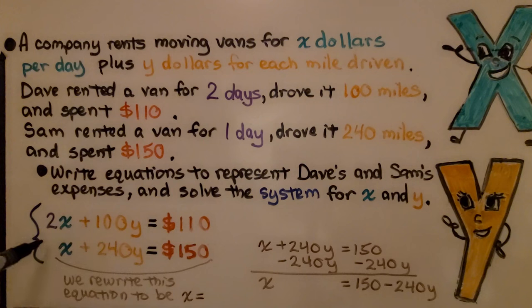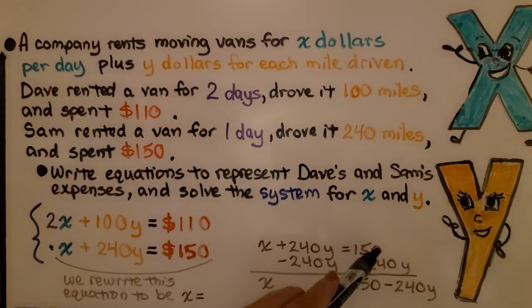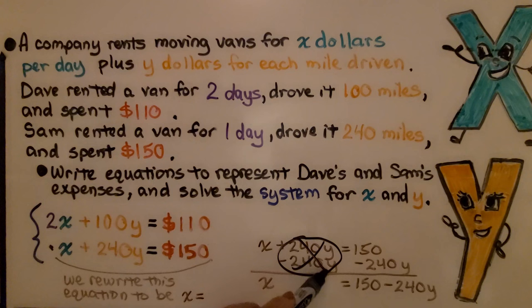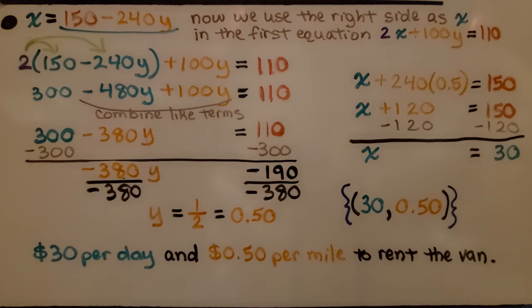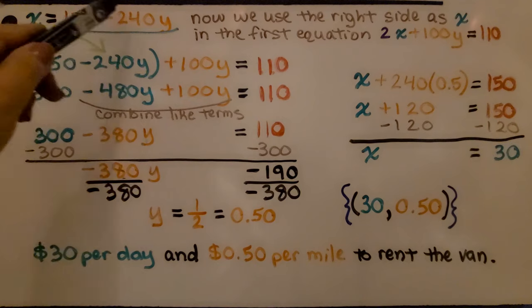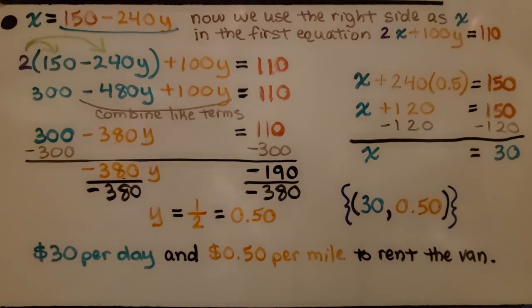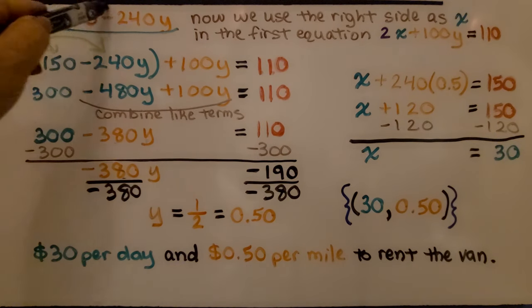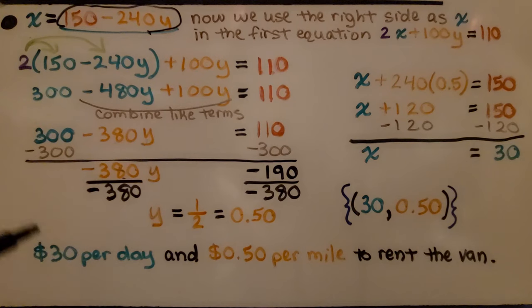Our equations are going to be 2x, because he has 2 days at those dollars, plus 100y, that's how many miles he drove, and it equals $110. For Sam, we have x, because it's just 1 day, plus 240y equals $150. We can rewrite this equation to be x equals something. We have x plus 240y equals 150. If we subtract 240y from each side, we're going to have x equals instead of y equals. We're not putting it in slope-intercept form. On this side, we have 150 minus 240y. Now we know x is equal to this amount.